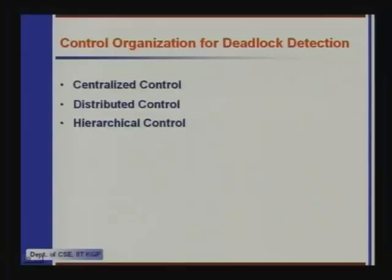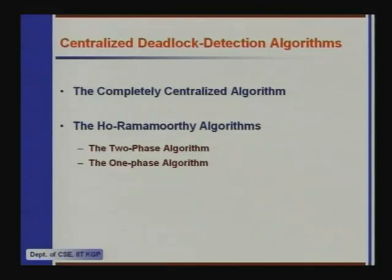The third category is hierarchical control, where there is a hierarchy in which deadlock detection takes place — we will take that up only if we have time towards the end. Let us first look at the completely centralized algorithm. In the completely centralized algorithm, one process sends out requests to all the other processes to send their wait-for statuses — which process has acquired which resources and which process is waiting for which resources — then it constructs the global wait-for graph and checks whether it has cycles.